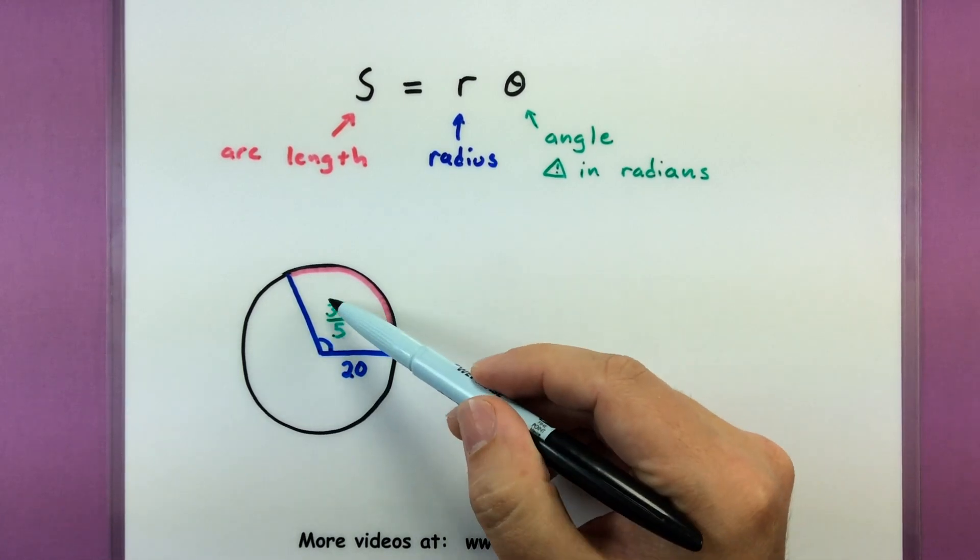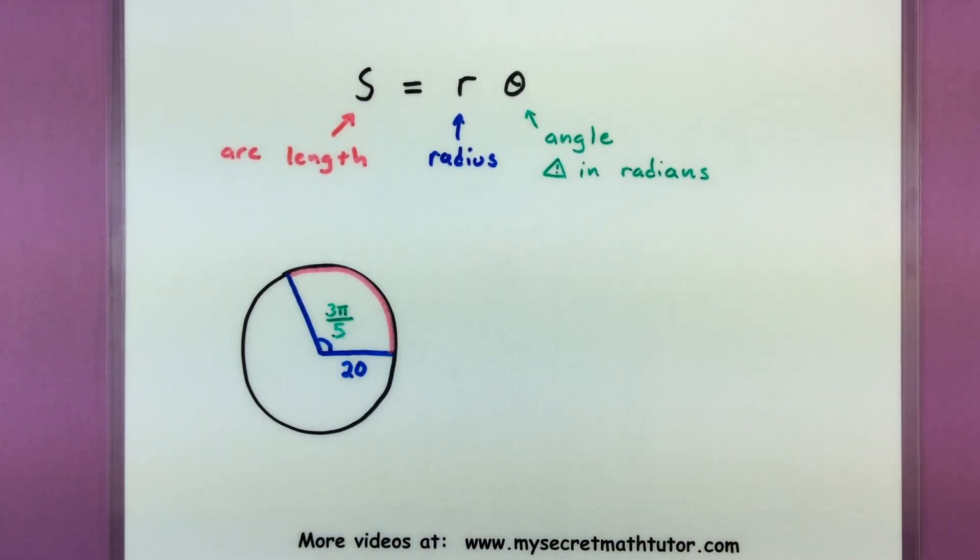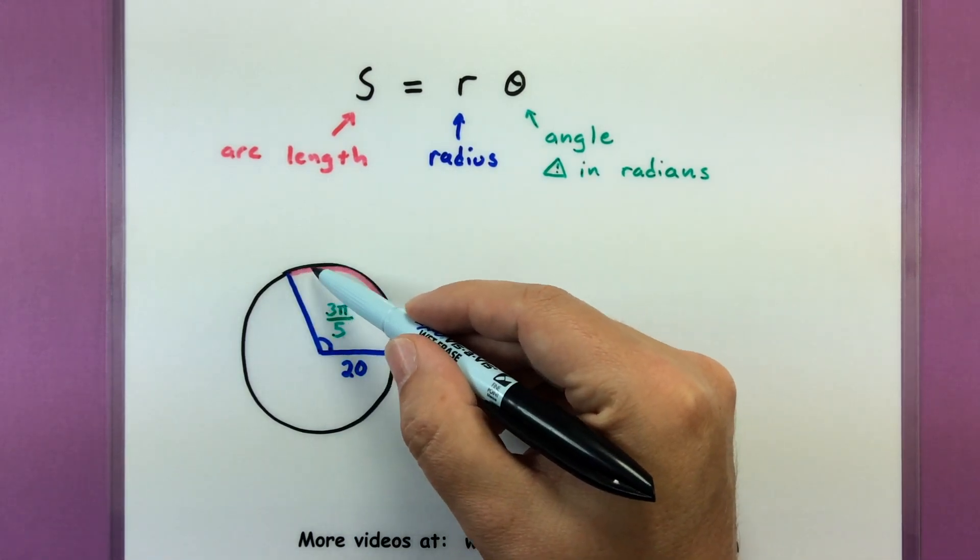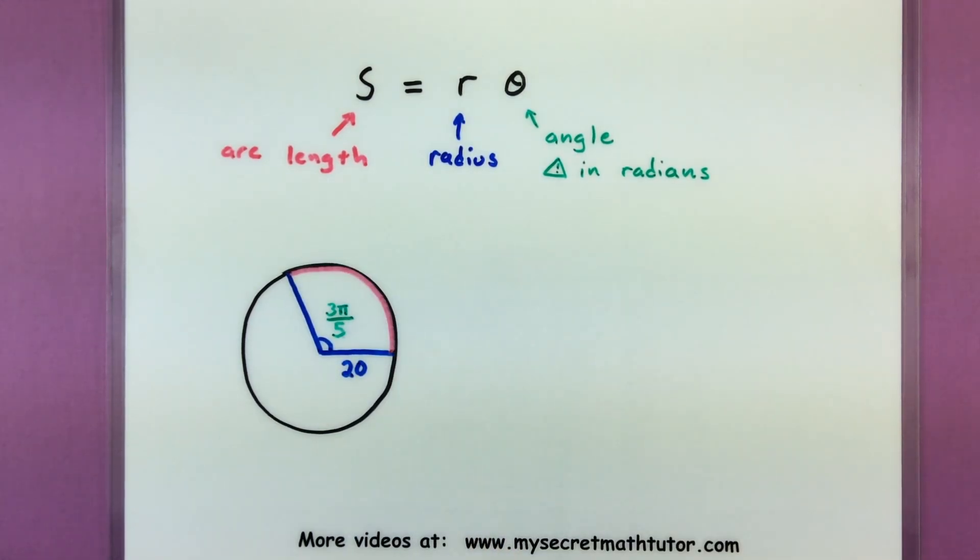For this circle, I have an angle on the inside, 3π/5. It's in radians. And I have a radius of 20. What I don't know is what is this red portion? What is the arc length?